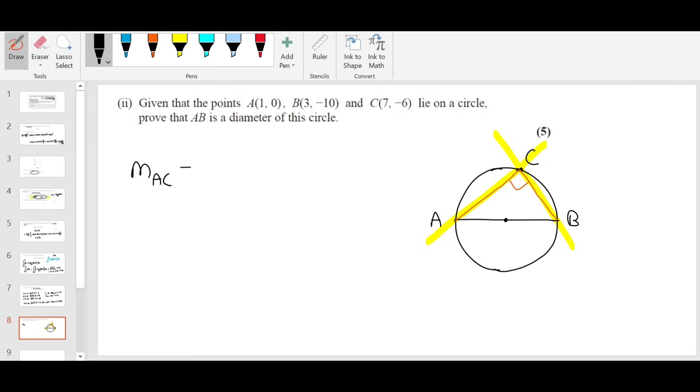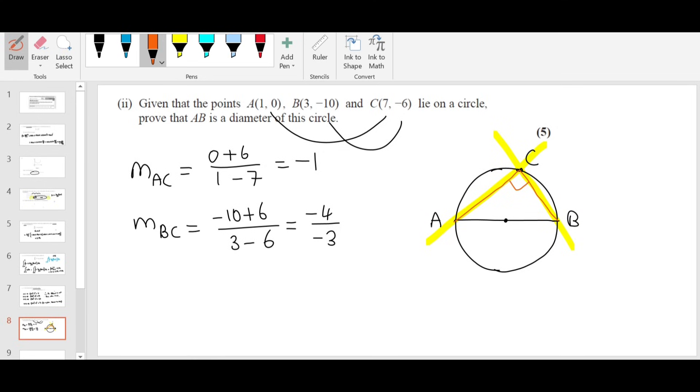Let's find the slope of AC first using A and C. Y2 minus Y1 divided by X2 minus X1. 6 over minus 6 is minus 1. And find slope of BC now using B and C. Y2 minus Y1 divided by X2 minus X1. You get minus 4 divided by 4. For the first one, AC is 0 plus 6, 1 minus 7, 6 divided by minus 6. It has to be 3 minus 7, so you get positive 1.